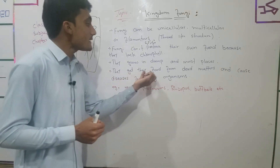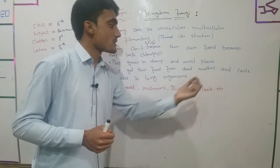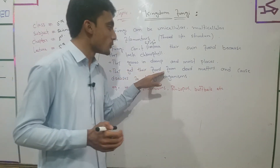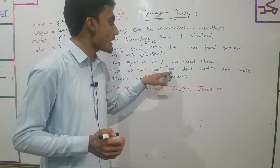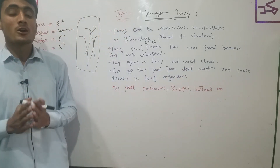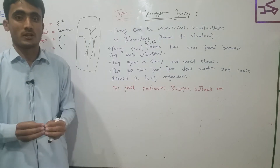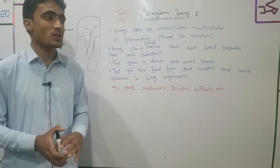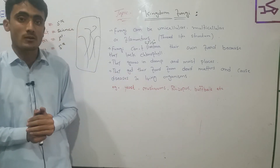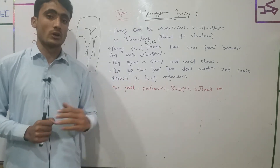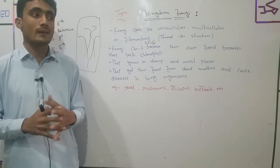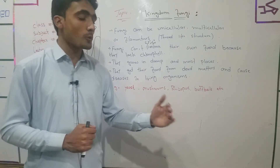They get their food from dead matter. For example, when an animal or plant dies and decays, fungi get their food from that dead and decaying matter.